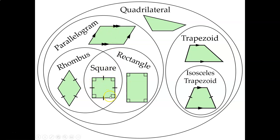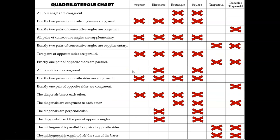A square has two pairs of opposite sides that are parallel, just like rhombuses, rectangles, and parallelograms. And it has four congruent sides, just like rhombuses do. And it has four congruent angles, just like rectangles do. We also learned information about these shapes based on their diagonals, their mid-segments, and their consecutive angles — there's a lot of information to be able to identify about each of these figures.